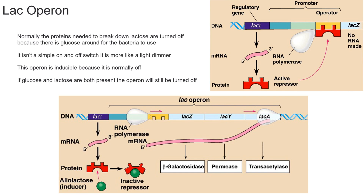As you can see over here, you have the lac z, lac y, and lac a genes, and those are all going to encode for proteins that help break down lactose. Normally in bacteria, if there's glucose around, you're going to have a repressor that is bound to the operator region, and that's going to prevent the RNA polymerase from transcribing the lac operon — the lac z, lac y, and lac a.